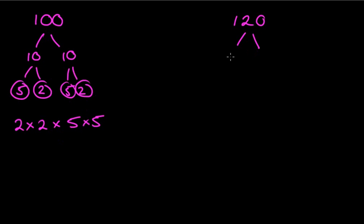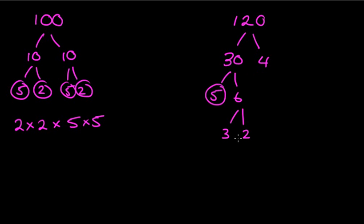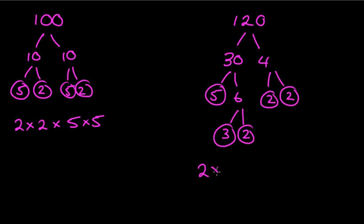For 120, I'm going to split it using 4 and 30. Actually, let's use 5 and 6 for part of it — 5 is prime, and 6 gives 3 and 2, both prime. For the 4 we get 2 and 2, both prime. Writing those out: 2 × 2 × 2 × 3 × 5.